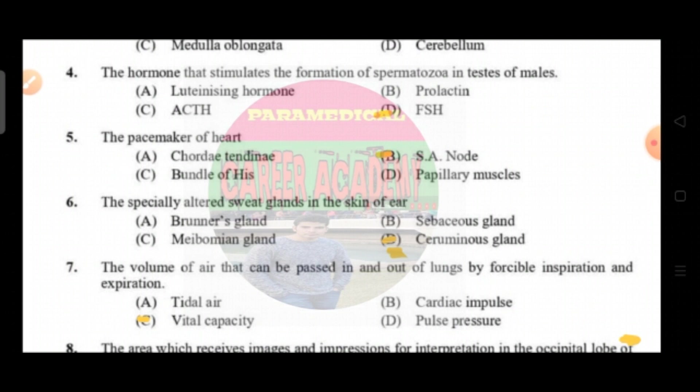Question number four: the hormone that stimulates the formation of spermatozoa in the testes of males. Option A is luteinizing hormone, option B prolactin, option C ACTH, and option D is FSH. The correct answer is option D, that is FSH.